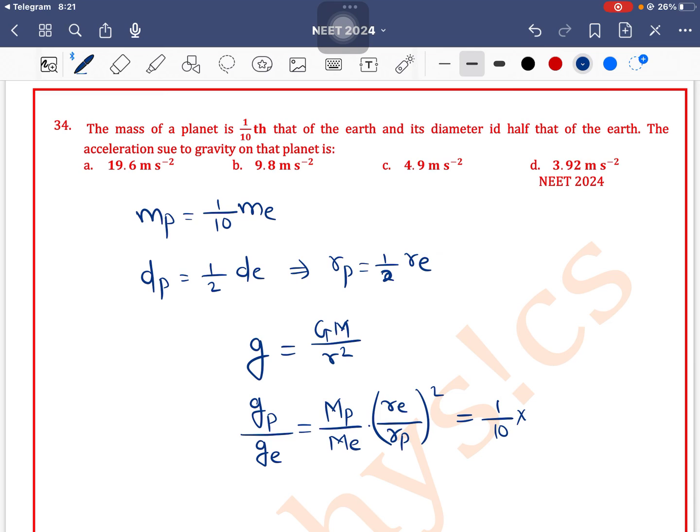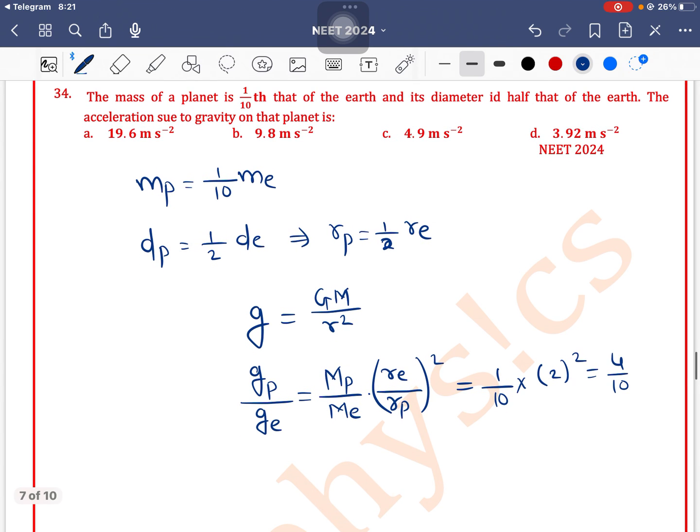2 squared is 4, so 4/10. So gp is equal to 4/10 times the acceleration due to gravity on the surface of Earth. So 4/10 times g is 9.8.